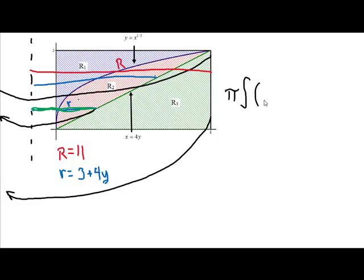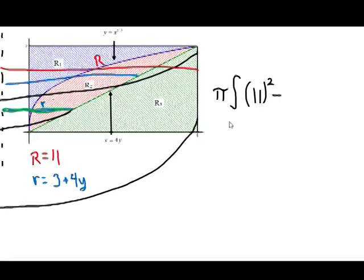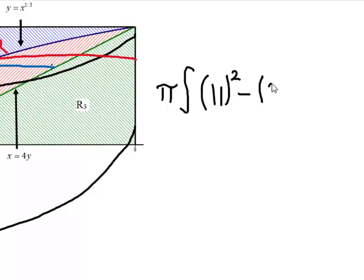Our big radius is 11. That'll be getting squared, because of the cross-sections of the area of a circle. And our little radius, as we determined, is 3 plus 4y. We wanted it in terms of y, because we had a vertical axis. So, we're going to be integrating with respect to y.